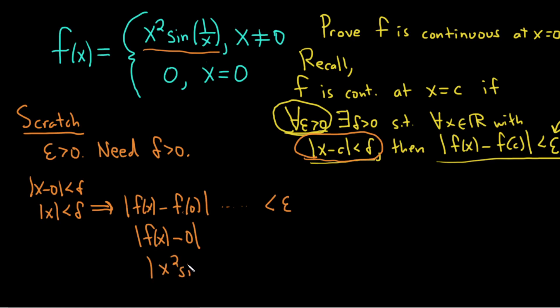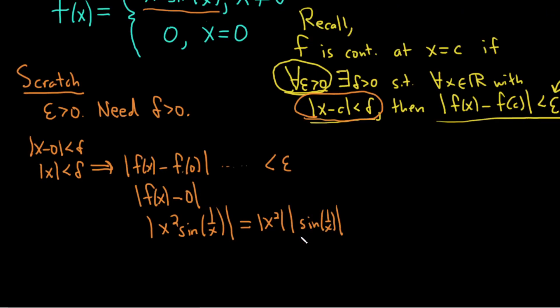And we know that we can break it up as follows, properties of absolute value. And further, we know that the absolute value of sine is less than or equal to 1.